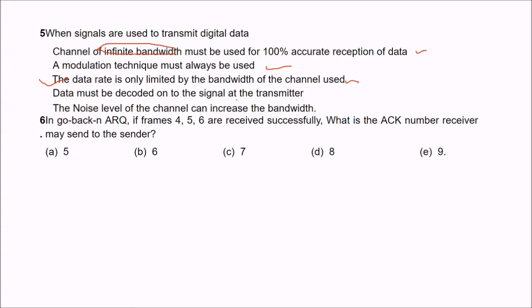The other options — data must be decoded at the transmitter, and the noise level of the channel can increase the bandwidth — are also not correct. So the answer is that the data rate is only limited by the bandwidth of the channel used.